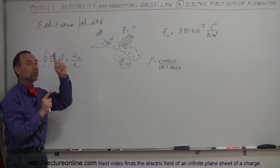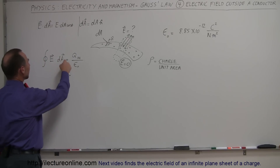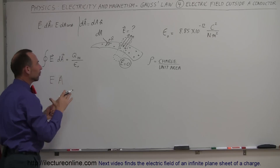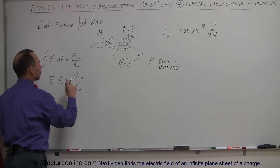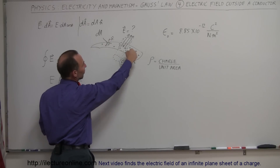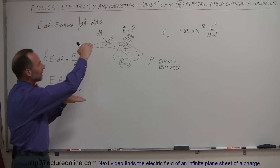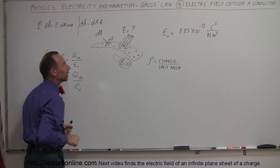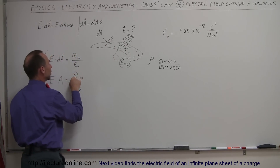When the angle is zero, we can simplify the integral and write it as E times the total area of the surface, which equals the charge inside divided by epsilon sub nought. The charge inside is the charge contained within the Gaussian surface. Here I drew a conductor with charge on the outside and a cylindrical-shaped imaginary Gaussian surface that protrudes through the conductor, with a portion sticking outside above and below.